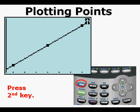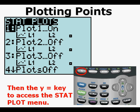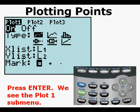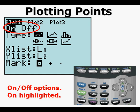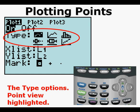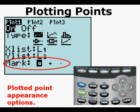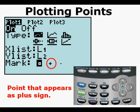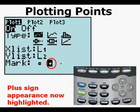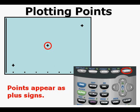Now we're going to look into the STAT PLOT menu by pressing the SECOND key, then the Y equals key to access the STAT PLOT menu. Press ENTER to see the PLOT ONE submenu. Plot 1 is ON because ON is highlighted. The next options are the types of plots — there are six of them, and the point view on the upper left is highlighted. The X list is defined as L1 and the Y list as L2. At the bottom we have the plotted point appearance options. The plus sign point option is selected and highlighted. Press GRAPH — the points on the graph now appear as plus signs.